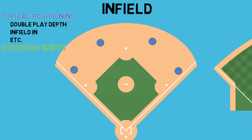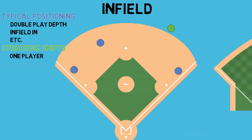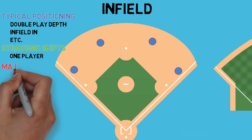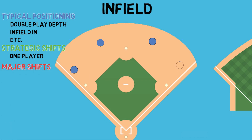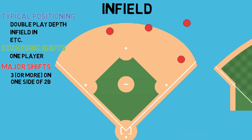Moving on to the strategic shift — this is where one player may be out of their typical position, such as a second baseman moving out into the outfield because the hitter at the plate never puts the ball on the ground towards the right half of the field. Then there are your major shifts, which include moving three or more players to one side of second base — typically to the right side of the bag when lefties are up, and the left when righties are. It's not uncommon to see the third baseman even shift to directly behind second base.